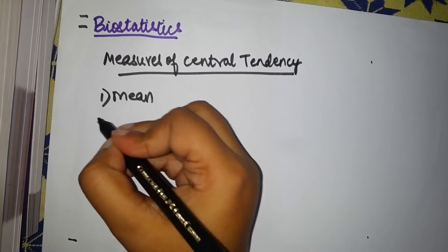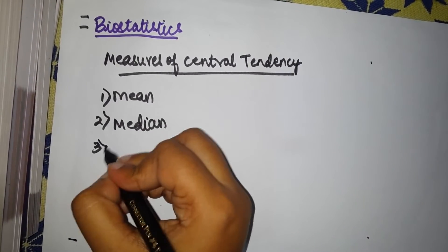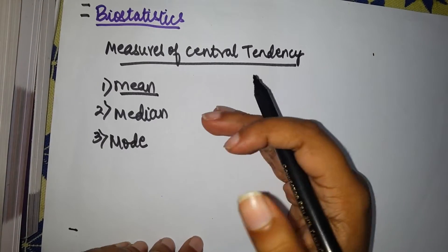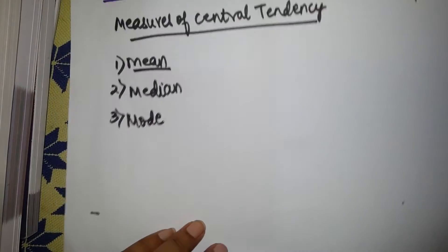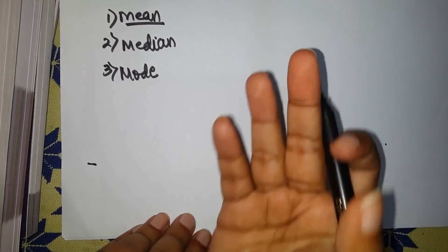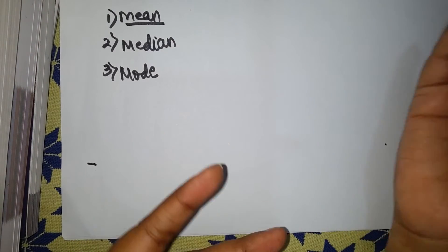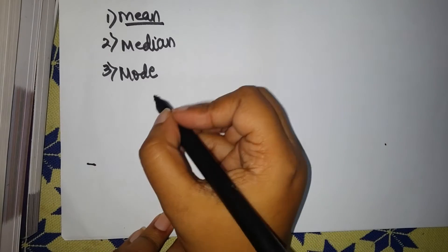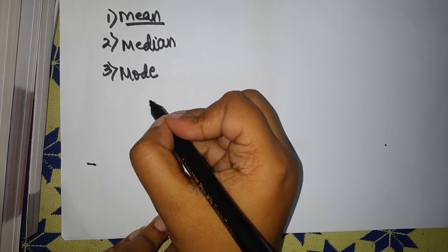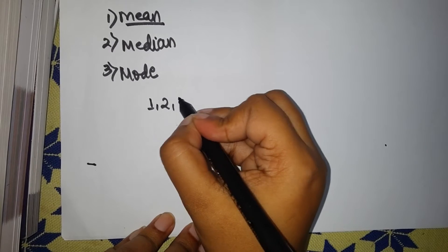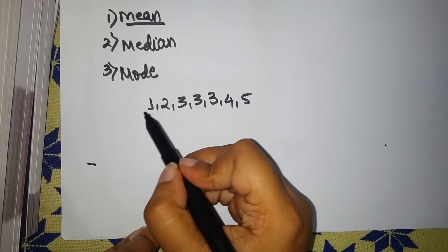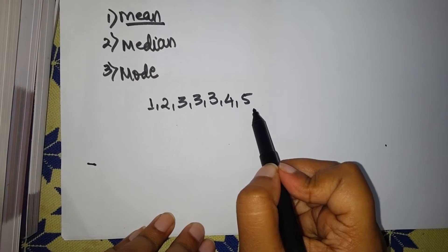One is mean, second is median, and mode. Mean has another name known as average. So you take any random value — let's say you go to a classroom and arrange people in ascending order of their height, like 1, 2, 3, 3, 3, 4, 5. This is arranged as per ascending order of their height.